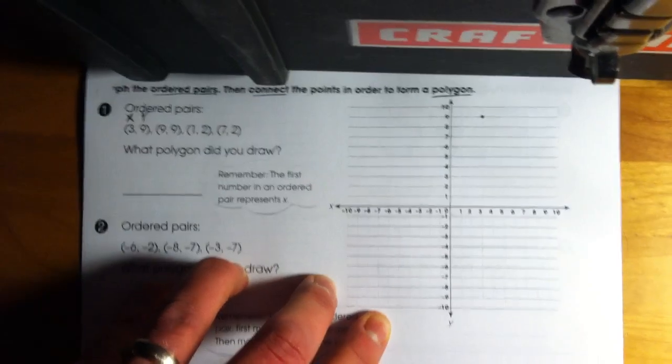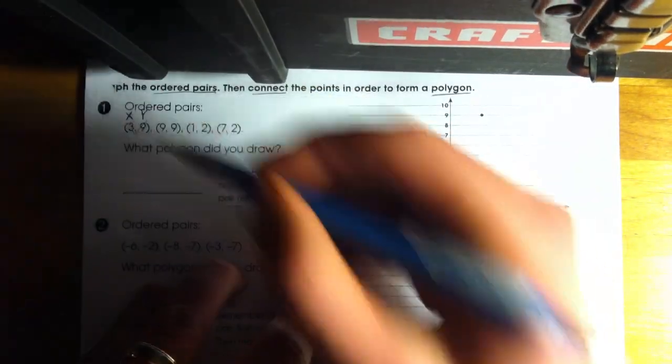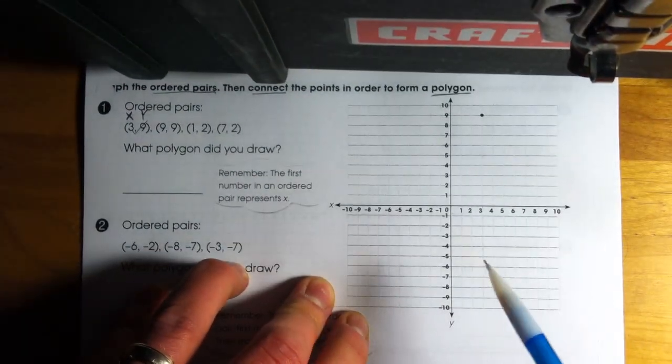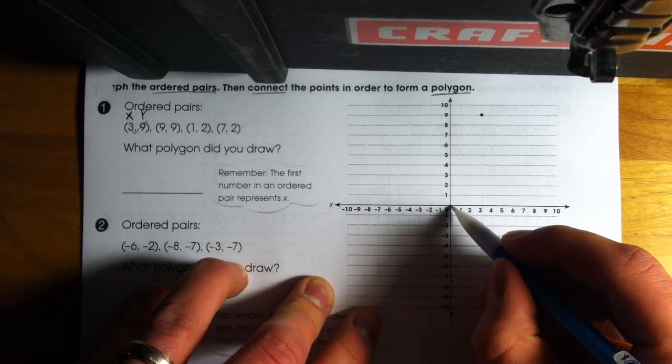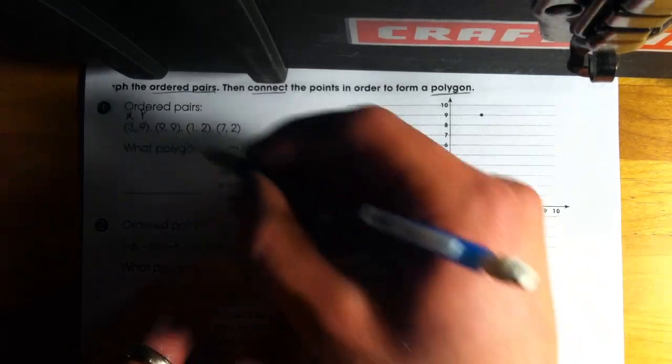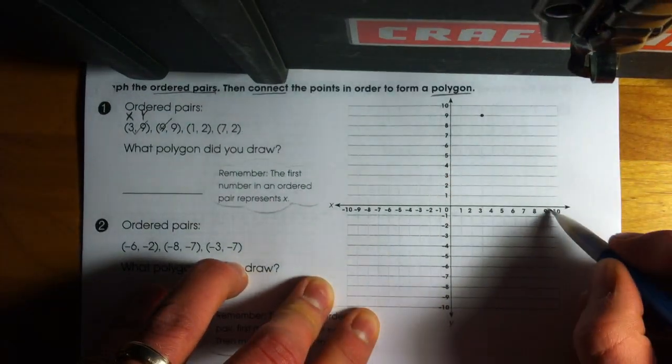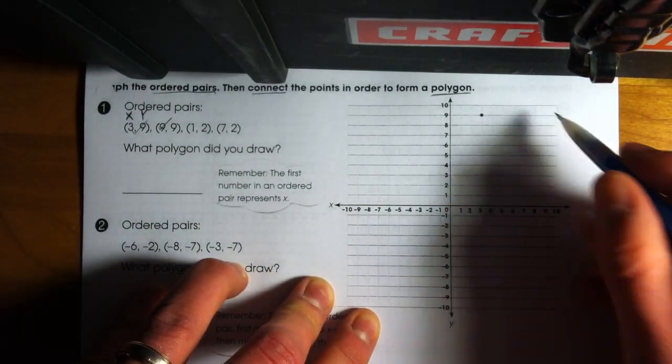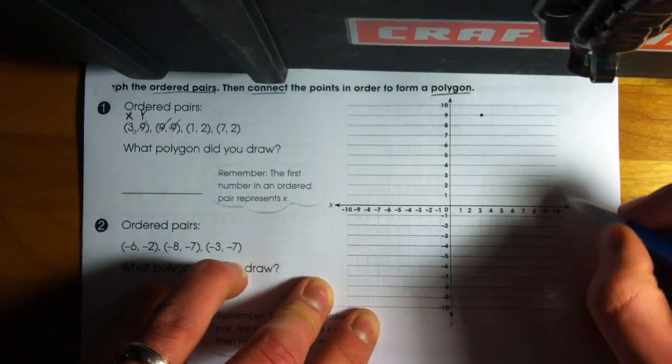So the first point, they already have graphed for us. So I can check that one off our list. Our next ordered pair is 9, 9. So I know my x-coordinate. I'm going to go to the right 9 places since it's positive. And then my y-coordinate is also a 9, so I'm going to go up once again along the y-axis 9 places.